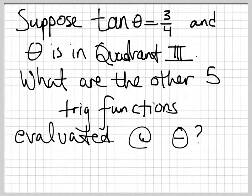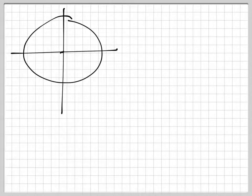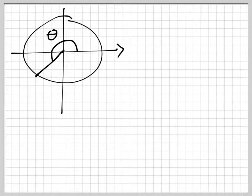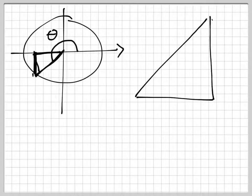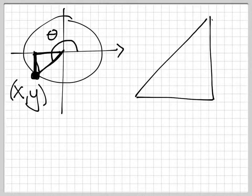Now suppose you're told that tangent of theta is 3/4, and that theta is in quadrant 3. This 3/4 is not an angle we know — none of our familiar angles give us 3/4 for tangent. Let's draw a picture. Here's your circle, there is your angle — remember theta always comes from the positive x direction. We need to figure out the x and y values. If we have them, we can figure out every trig function for theta because they're only based on x and y.